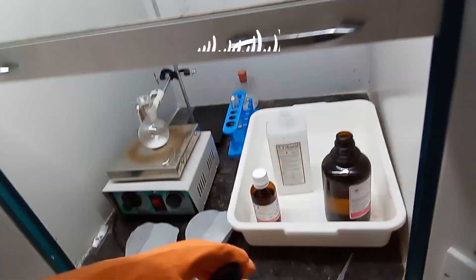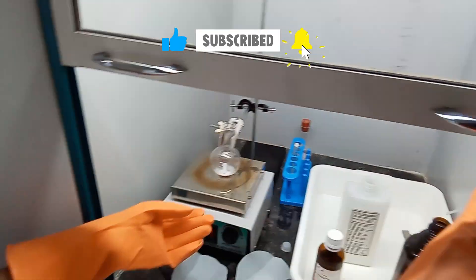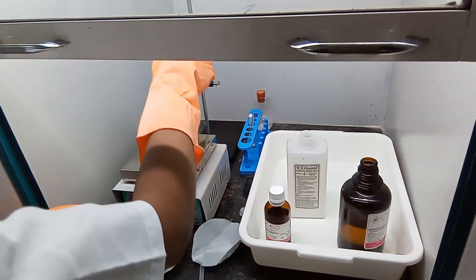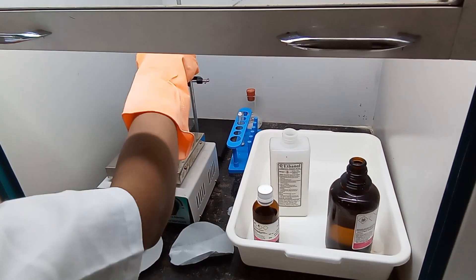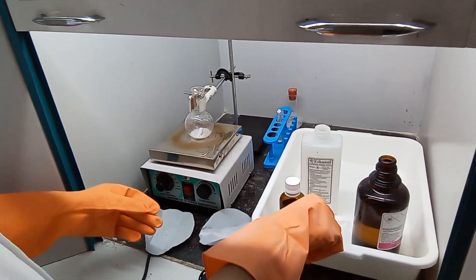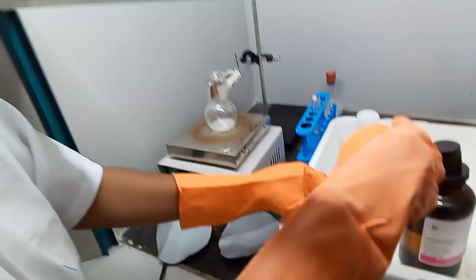Afterwards, the solvent DMF and ethanol is added. Stirring is then started. And finally, some triethylamine is added.